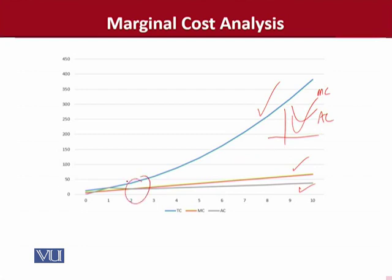So yeh, yahan par yeh point occur ho raha hai, because yeh to-the-scale diagram banaya gaya hai. Aur ismein agar aur values include karein, to phir yeh waisi shape banegi. But in real life, jab hum graphs ko banate hain aur real life values ko use karte hain, to necessary nahi hai ke textbook ki jo diagrams hain — jo ki hypothetical data par depend karti hain — bilkul waisi banein. But waisi points zaroor mil sakti hain, jaisa ke hamne is point ko dekha, yeh occur ho raha hai.